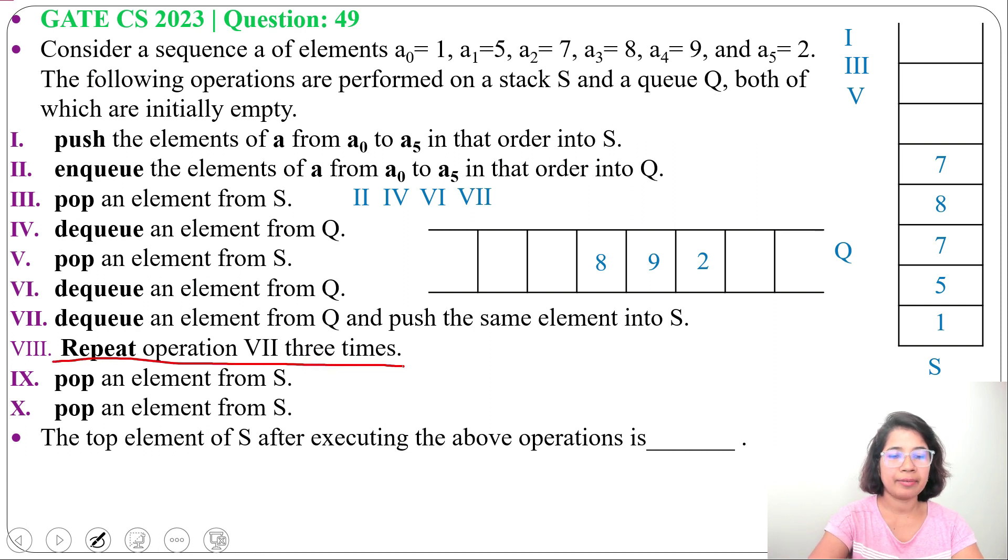Next operation: repeat operation 7 three times. Means 3 times we will delete from Q and we will push into stack. So first we will delete 8 from Q and we will push 8 into stack. Next we will delete 9 and we will push into stack. Next we will delete 2 and we will push into stack.